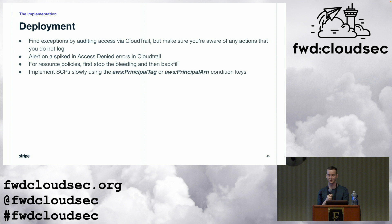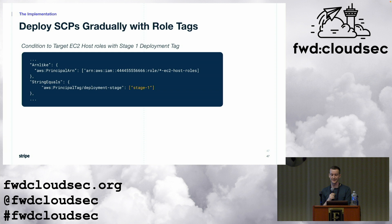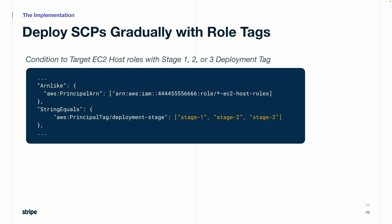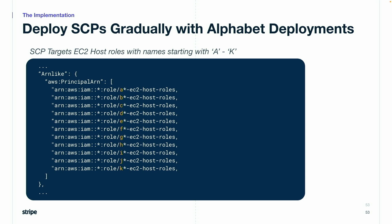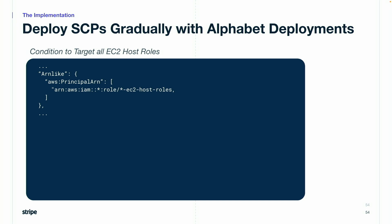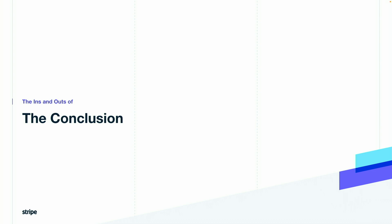I'll show two approaches for incremental SCP deployments. The first is tag-based: give the relevant roles tags to indicate different deployment stages, then stage by stage add them to the condition. When you're ready for the SCP to target all relevant roles, you just remove the condition. The second method is based on role names — I call these alphabet deployments. This method is useful when you have a bag of roles and don't really care about the deployment order. Here we're only targeting the EC2 host roles that start with the letter A, then A through C, and so on. Once you've covered the entire alphabet and your SCP is fully deployed, remove the condition and it will match all EC2 host roles regardless of their prefix. This method is crude and kind of ridiculous, but it works.